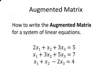So a system of linear equations would be, for example, these three equations we have here. 2x1 plus x2 plus 3x3 equals 5. That's one of our equations.